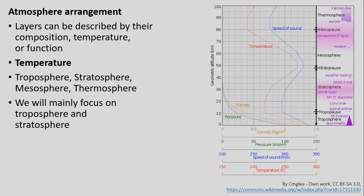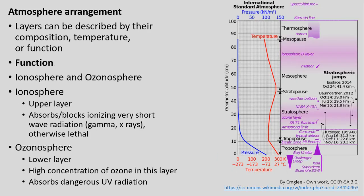We'll mainly be focused on the troposphere and a little bit on the stratosphere. The troposphere is the main place where all the weather we think about day to day is occurring. The stratosphere is also important because it's tied to the ozonosphere. There's also an outer layer termed the ionosphere, quite high up — 70, 80, 90 kilometers out from Earth's surface.